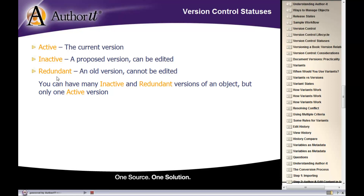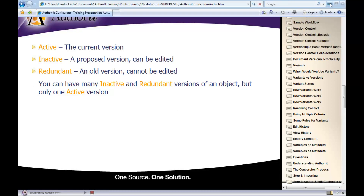Version numbers are whole numbers only — they increment by one, two, three, four, five, and so on, and we don't have control over those numbers. You can have as many inactive and redundant versions of an object as you need, but only one version of that object can be active at a time — meaning only one version can be publishable. This way, when you go to publish, Author-it knows exactly which object to publish.